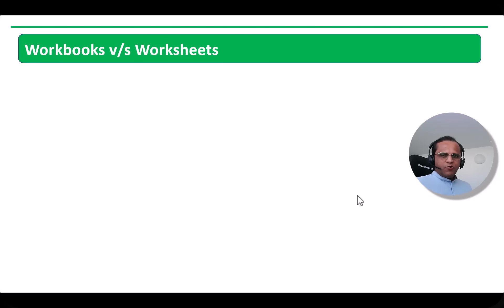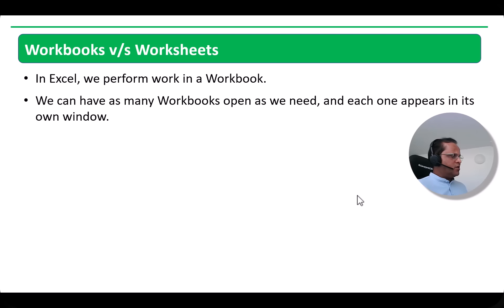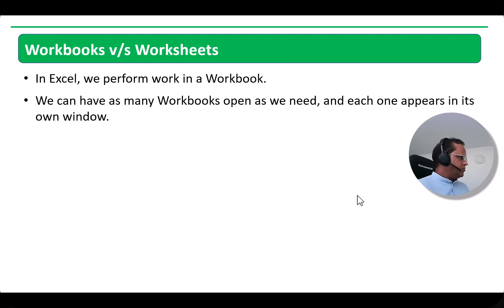When talking about Microsoft Excel, we also have important terminologies like workbook and worksheet. In Excel, we perform work in a workbook — whenever we open a Microsoft Excel file, that file is known as a workbook. Within the workbook, we may have various worksheets. Whatever sheets we have in a particular workbook are known as worksheets. We can have as many workbooks open as we need, and each one appears in its own window.